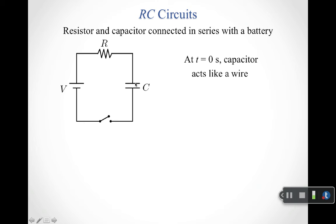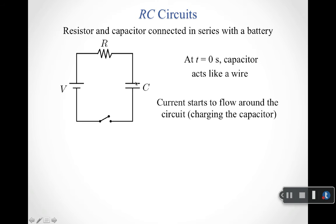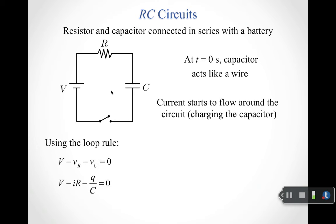At t equals zero, there's no charge built up, so there's no potential across the capacitor. Initially, charges simply start moving around the circuit. At t equals zero, your capacitor acts like a wire and current starts to flow, which begins charging the capacitor. To analyze what's happening at any time after that, we use the loop rule.